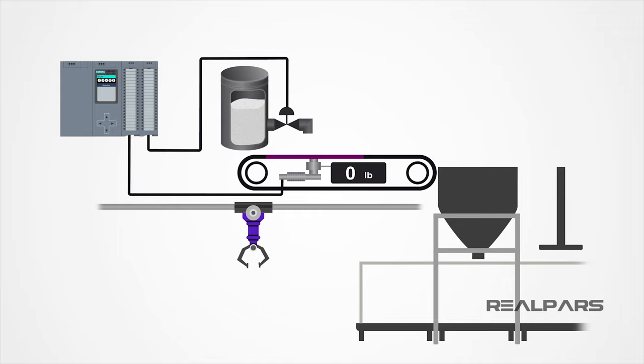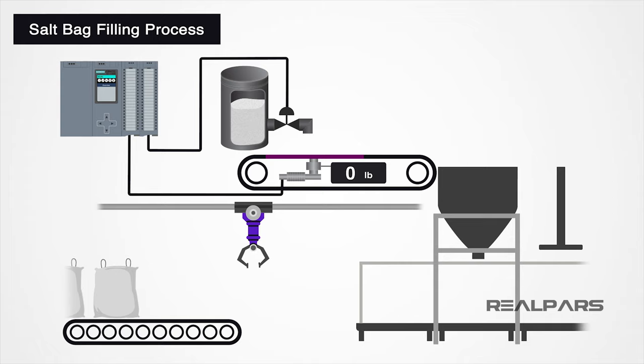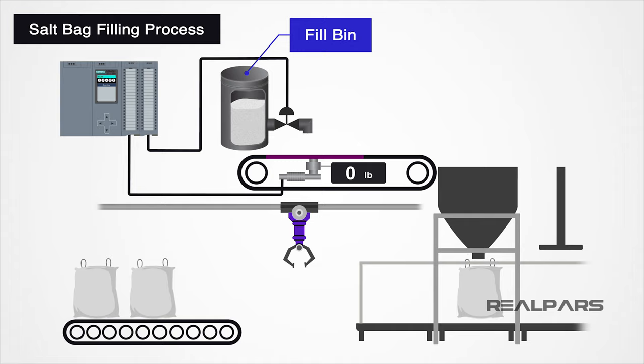Now that we have discussed the different types of load cells, let's discuss some applications. The first application we are going to discuss is a salt bag filling process. In this application, empty bags are loaded into a machine where arms will swing down and pick up an empty bag, and place it underneath a funnel. Above the funnel, there is a fill bin that will dispense salt onto a conveyor belt with a built-in load cell, in order to dispense the correct amount of salt into the bags.